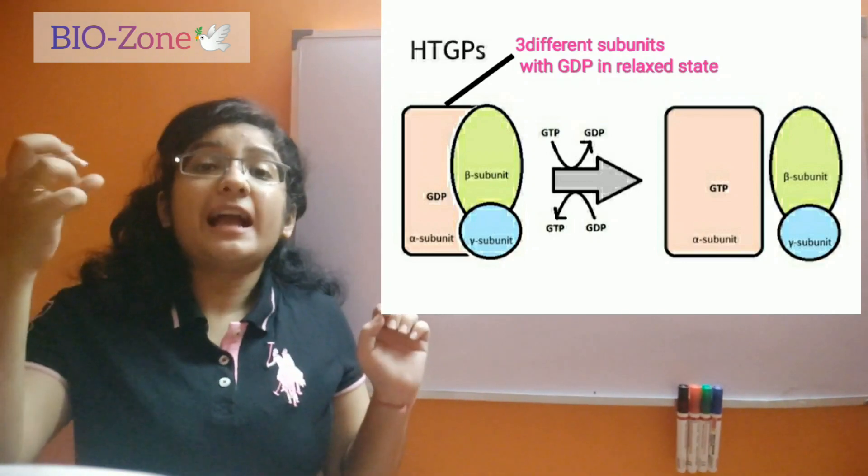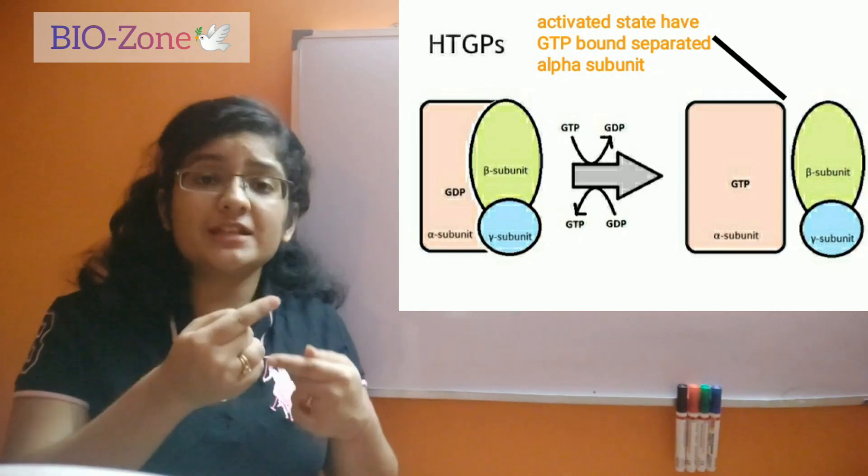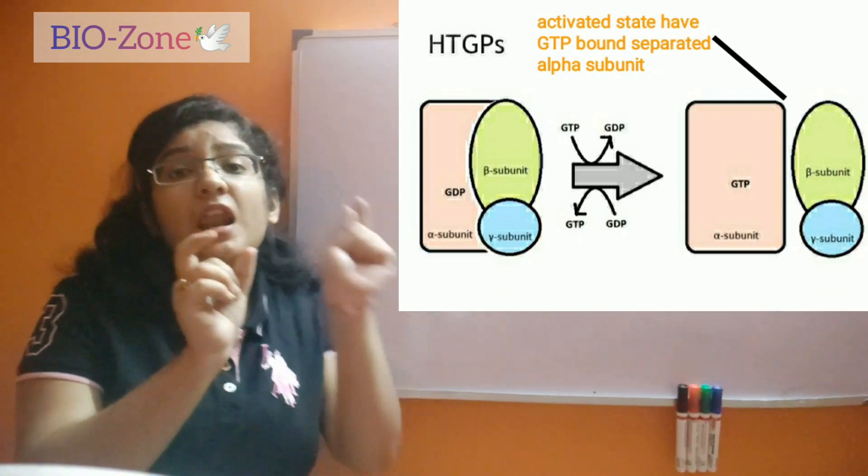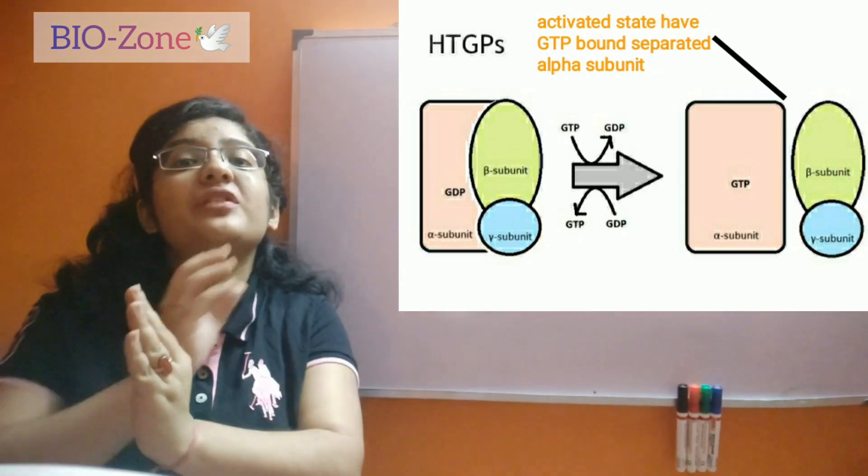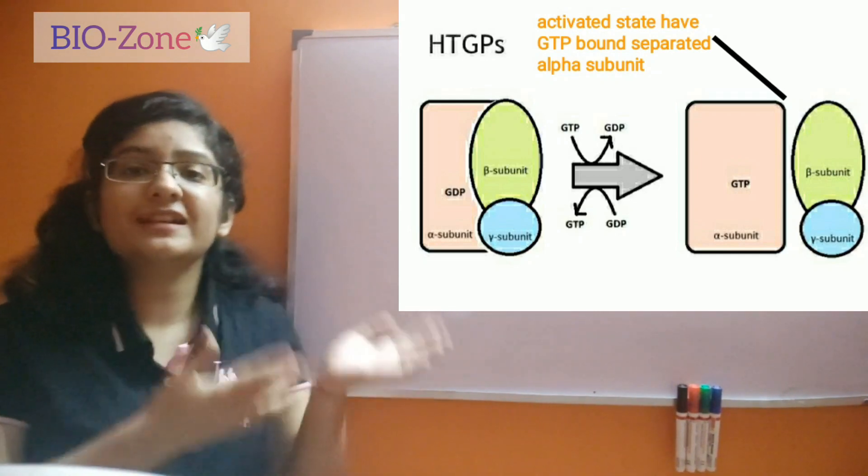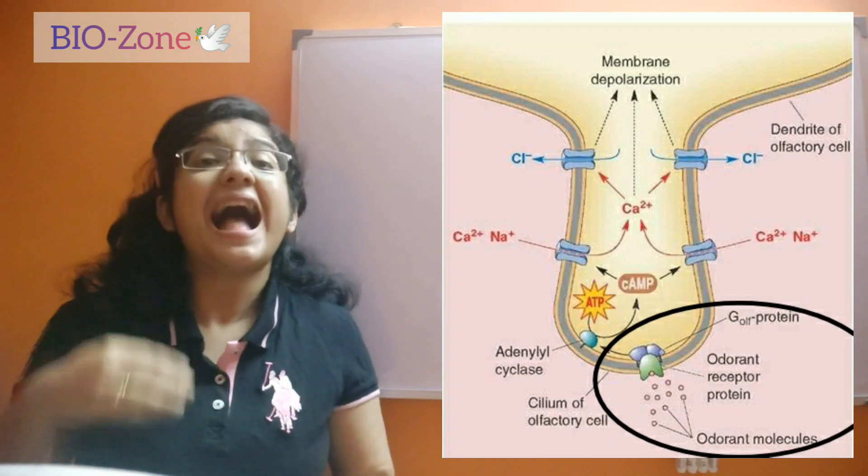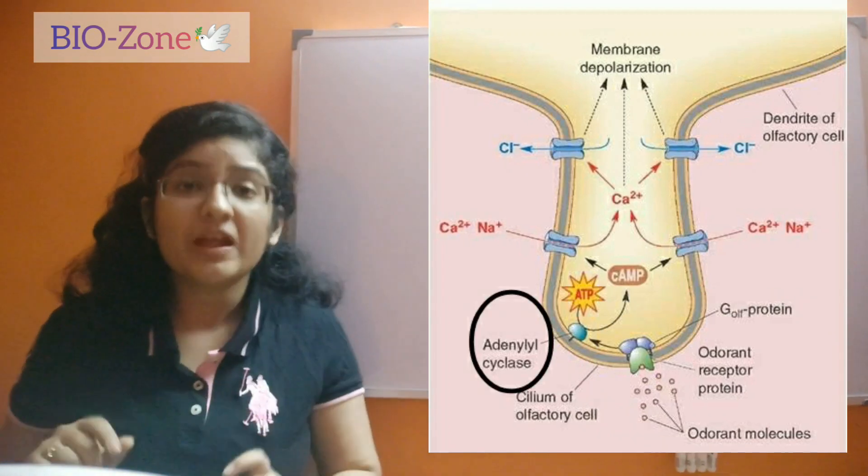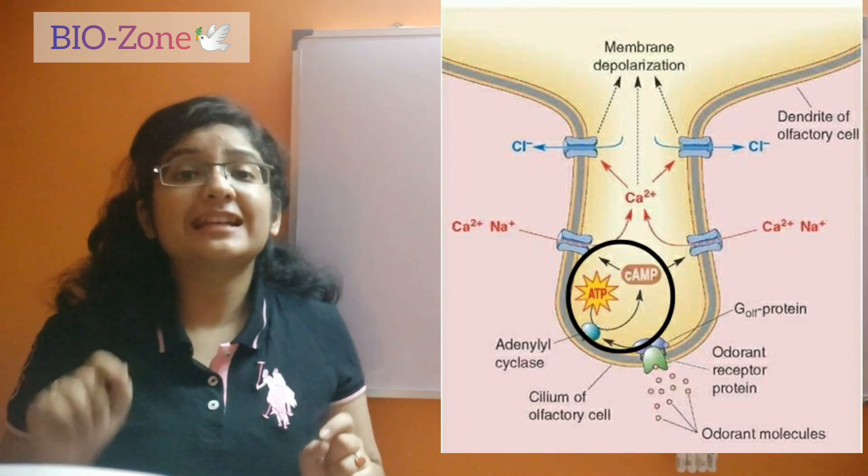When they acquire the signal and are activated, this GDP is exchanged with GTP and the alpha subunit along with the GTP goes away from the rest of the part. Here the GDP-alpha subunit activates adenylyl cyclase, which is an enzyme that converts ATP into cyclic AMP.